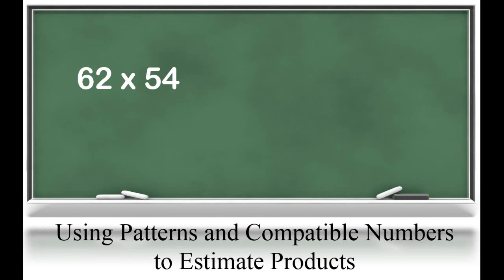We're not looking for rounding rules — we're just looking for friendly or compatible numbers. Using our knowledge of patterns: 6 times 5 equals 30, so 60 times 50 equals 3,000. So we know that 62 times 54 is about 3,000. This helps us to estimate, and also, when we learn multiplication, gives us an estimate to check for reasonableness once we find our actual product.